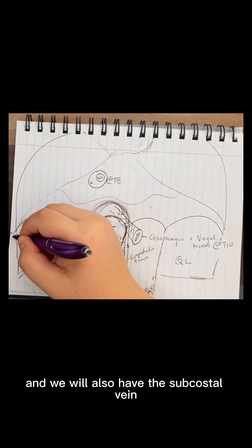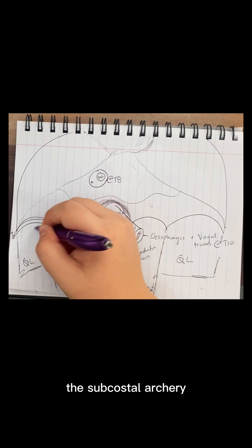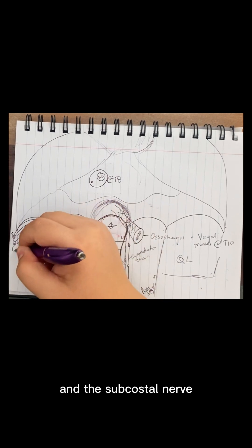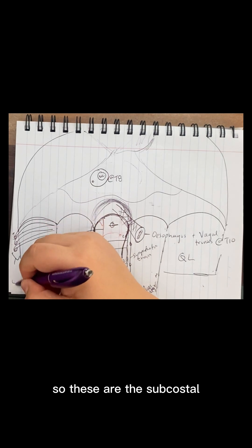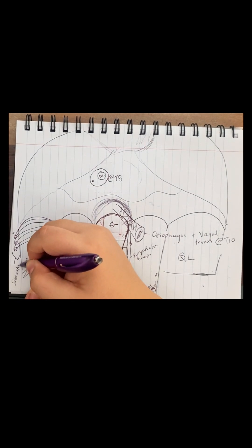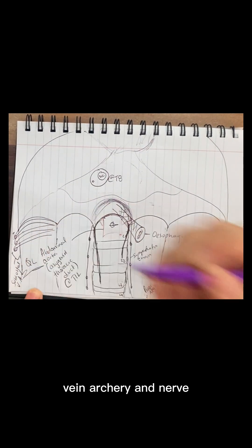And we will also have the subcostal vein, the subcostal artery, and the subcostal nerve. So these are the subcostal vein, artery, and nerve.